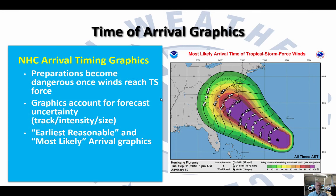The National Hurricane Center arrival time graphics address the time in which preparations will become dangerous — in other words, what's the time in which we think the tropical storm force winds could arrive at a location. When we look at these time of arrival graphics, there are two different versions: one that's the earliest reasonable arrival time, and another which is the most likely arrival time. Let's talk about what those mean and how they can be used in your preparation.